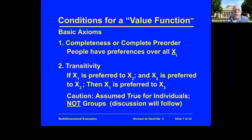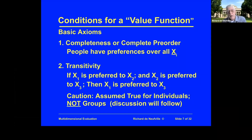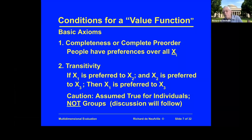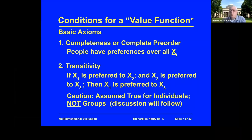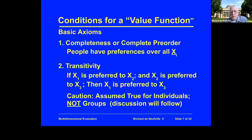There are three axioms. The first is known as completeness, or complete pre-order. It basically says that people have preferences over all choices — that doesn't mean you've thought about all possible choices, but that you are capable of making a preference. For example, you might be equally attracted to chocolate or strawberry ice cream; you don't have to prefer one to the other, but you can make a valuation. That is a necessary assumption — otherwise you can't have a function over outcomes.